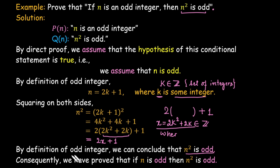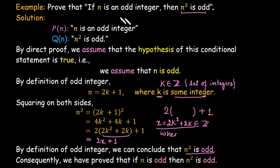So we have shown that if n is odd then n squared is also odd. This type of proof is called a direct proof — a straightforward proof where we start from the hypothesis and move towards the conclusion.